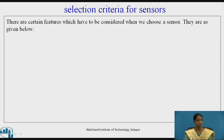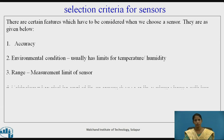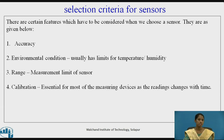There is a certain criteria on which sensors can be selected. The criteria are: accuracy, environmental condition — which usually has limits for temperature and humidity — the range, that is the measurement limit of a sensor, and calibration, which is essential for most measuring devices as readings change over time. For every sensor, calibration is one of the important aspects that should be taken into consideration.